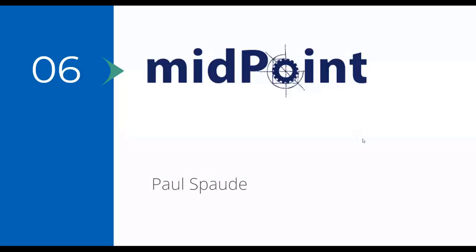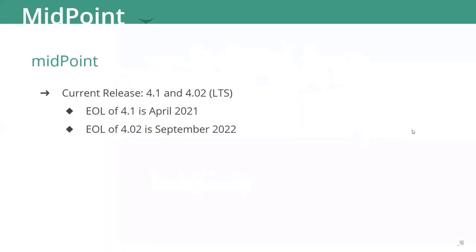All right, Paul, talk to us about Midpoint. Hello everyone, my name is Paul Spouty. I'm here to talk to you about Midpoint. If you're not aware, Midpoint is an open source identity access management governance system. It has a ton of features and functionality and serves as a central repository for all your identities, managing access, audit, and things like that. When combined with something like Grouper, it becomes even more powerful for that access part. The current release of Midpoint is 4.1 — they're working on 4.2 with no real timeline yet, possibly fall this year or spring next year.